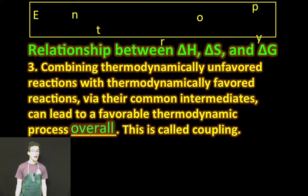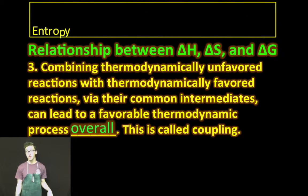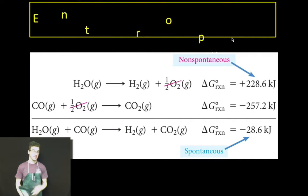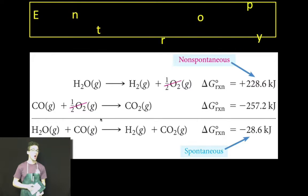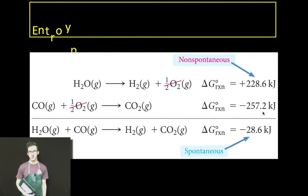Third thing to think about: combining thermodynamically unfavored reactions with thermodynamically favored reactions via their common intermediates can lead to an overall thermodynamically favorable process. We call that coupling. Now, there's an example on your screen and in your notes where we have a non-spontaneous or thermodynamically unfavorable reaction, and we couple it with a thermodynamically favorable or spontaneous reaction. So that overall, the combined reaction is thermodynamically favorable or spontaneous.